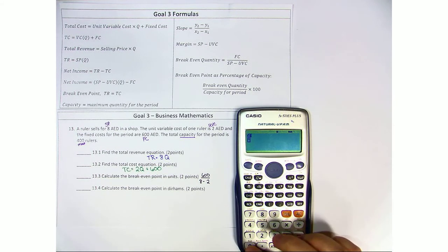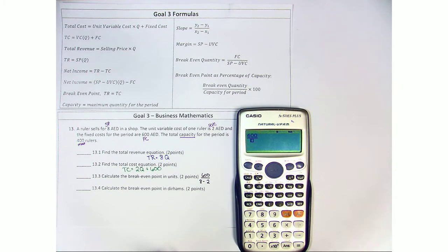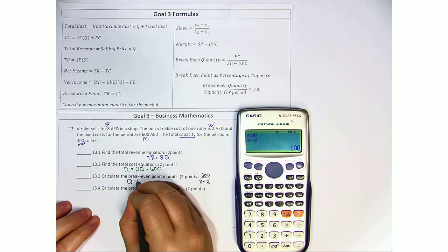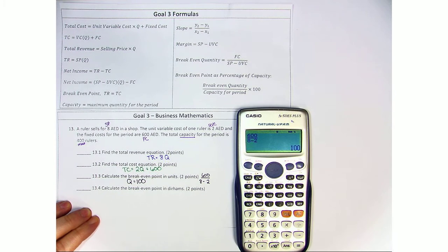Start with a fraction. 600 goes in the numerator, or the top number, and 8 minus 2 goes into the denominator, or the bottom number. And we see here that the quantity for breaking even is 100 units.